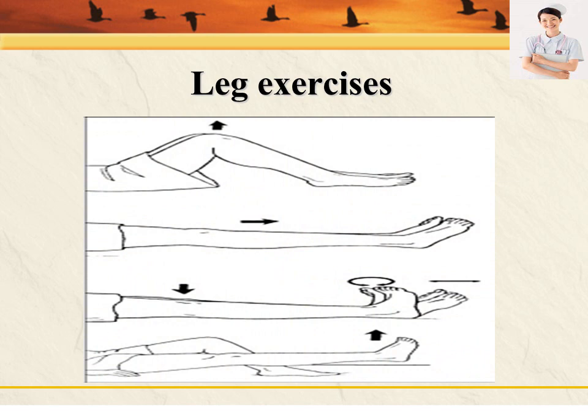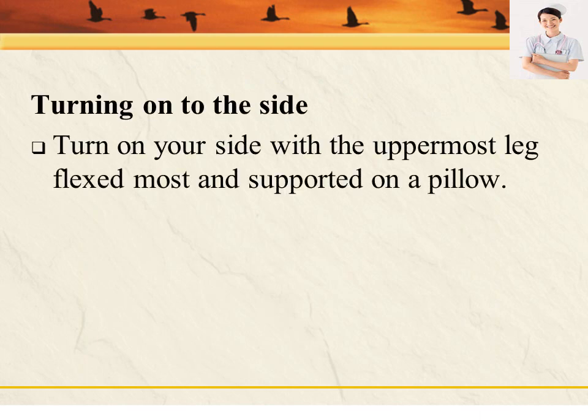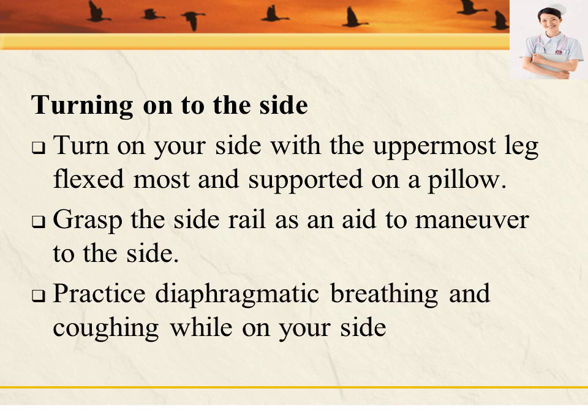Leg exercise includes leg flexion, extension, internal rotation, and dorsiflexion. For turning onto the side, turn on your side with the uppermost leg flexed most and supported on a pillow, then grasp the side rail as an aid to maneuver to the side.